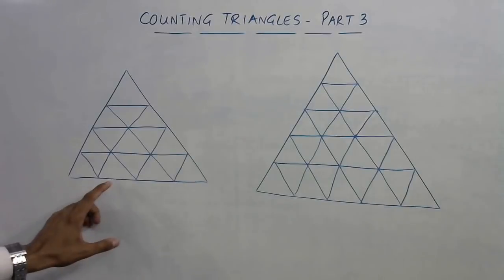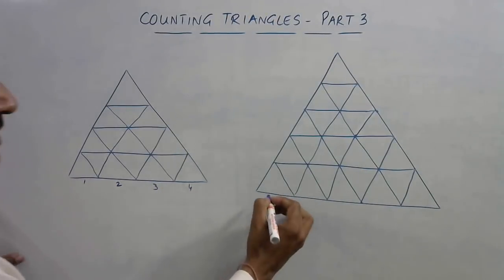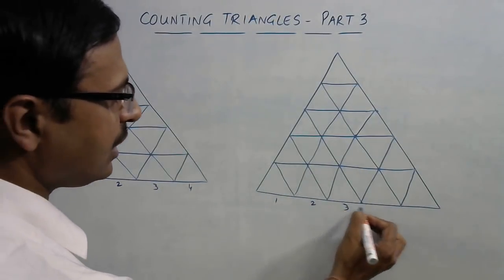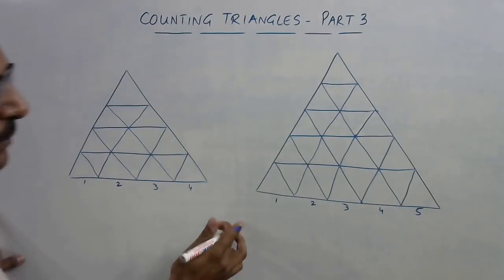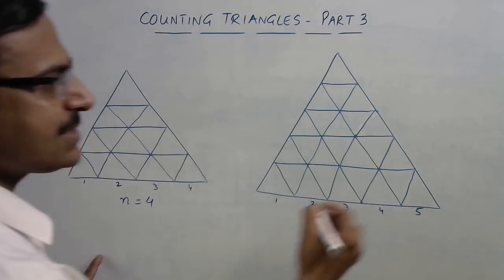Now see here, I'll just tell you how many triangles are there in the base. See, one, two, three, four - so there are four triangles at the base. But in this case you find one, two, three, four, and five triangles in the base.